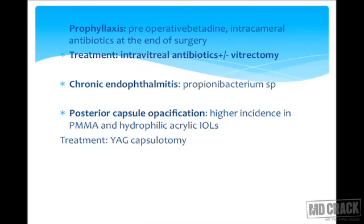Prophylaxis of endophthalmitis is extremely important. Two steps that have stood control trials and the test of time are preoperative instillation of betadine in the conjunctival cul-de-sac and intracameral antibiotics at the end of surgery. Treatment depends on severity and visual acuity at presentation. If visual acuity is less than hand movements, vitrectomy with intravitreal antibiotics is the first resort. If better than that, intravitreal injections can be given and repeated while monitoring closely for improvement, proceeding to vitrectomy if worsening.